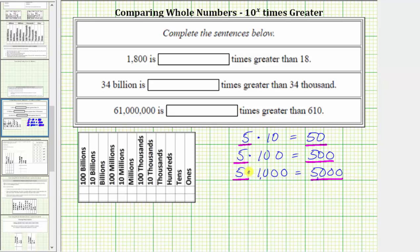Comparing the digits of five and 5,000, both numbers contain the digit five, but 5,000 has three zeros to the right of the five, making it 1,000 times greater than five.